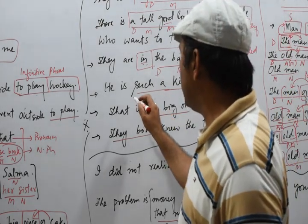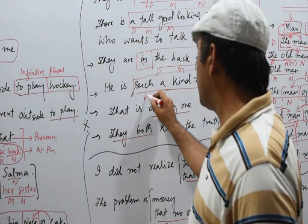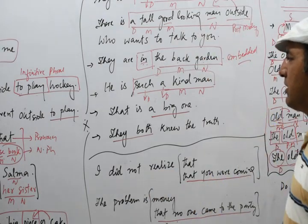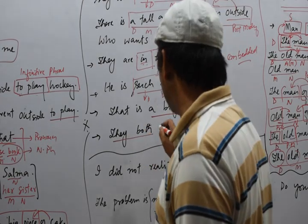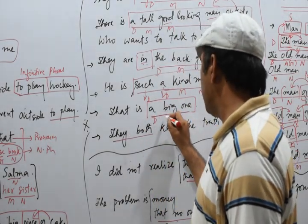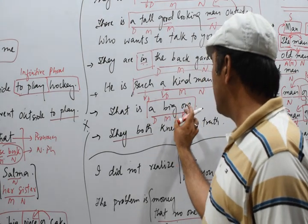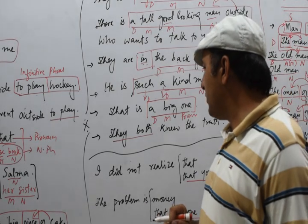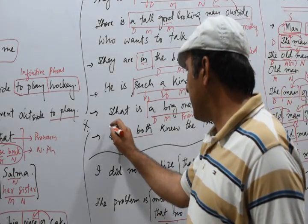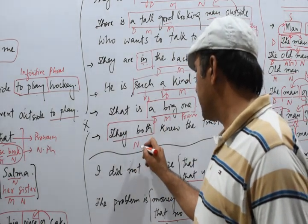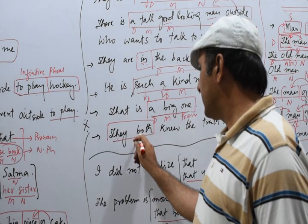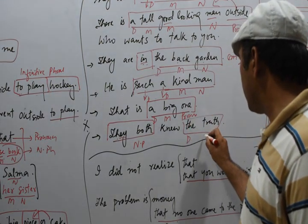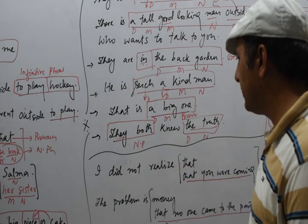Next: 'He is such a kind man.' Here 'such' and 'a' are both determiners, 'kind' is the modifier, and 'man' is the noun — so 'such a kind man' is also a noun phrase. Then 'a big one' — 'a' is determiner, 'big' is modifier, and 'one' is a pronoun as the keyword — this is also a noun phrase. Then 'they both' — this is also a noun phrase. And 'the truth' — 'the' is determiner, 'truth' is noun — so 'the truth' is also a noun phrase.